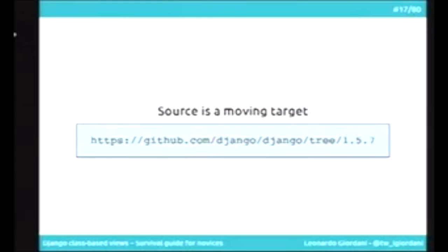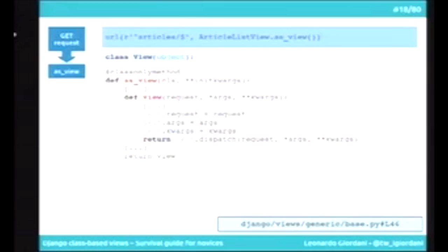Just a note: the source is moving. So to give you meaningful line numbers, I stick to version 1.5.7. But what I'm going to say is perfectly valid for newer Django versions — 1.6 and 1.7.